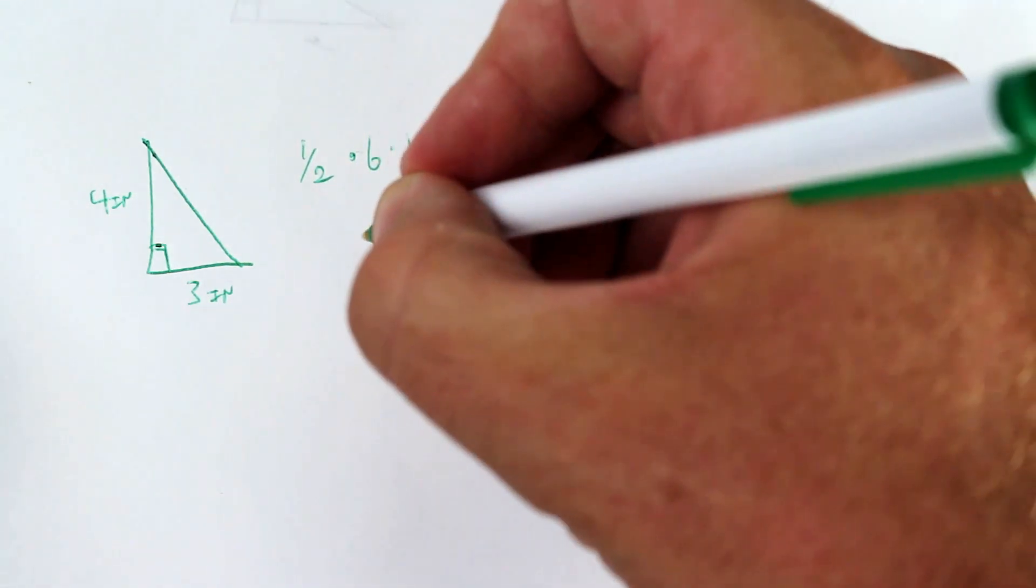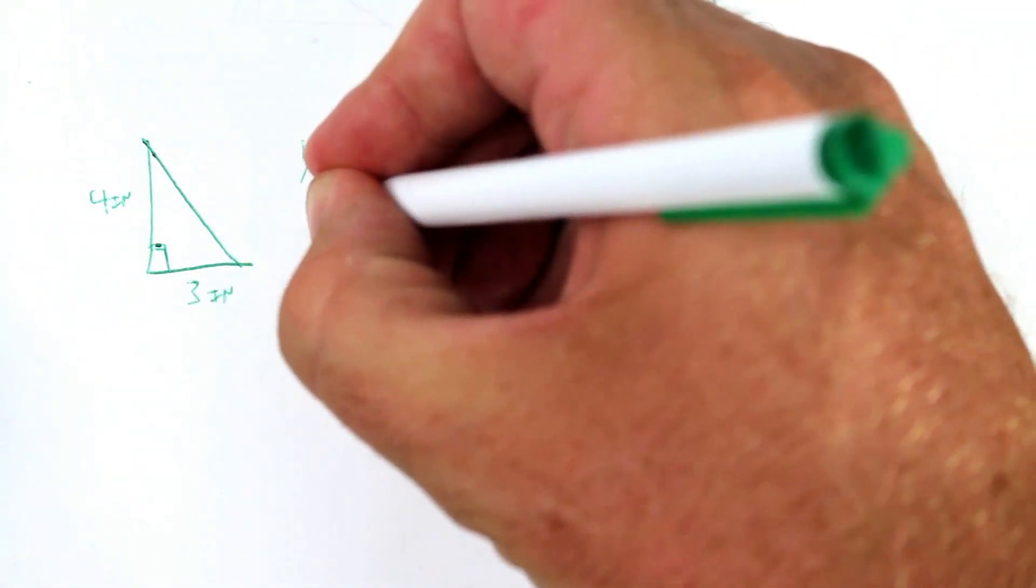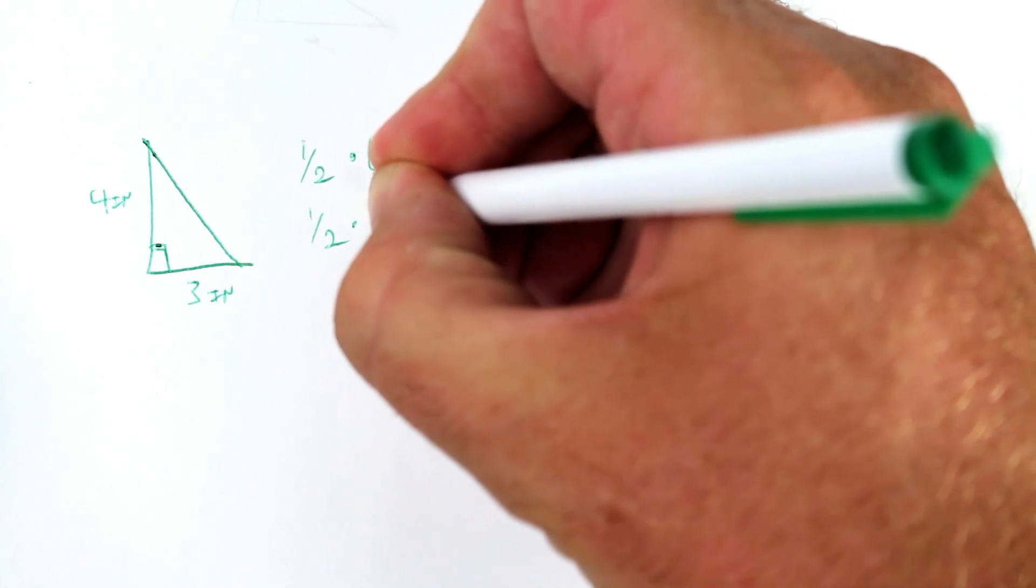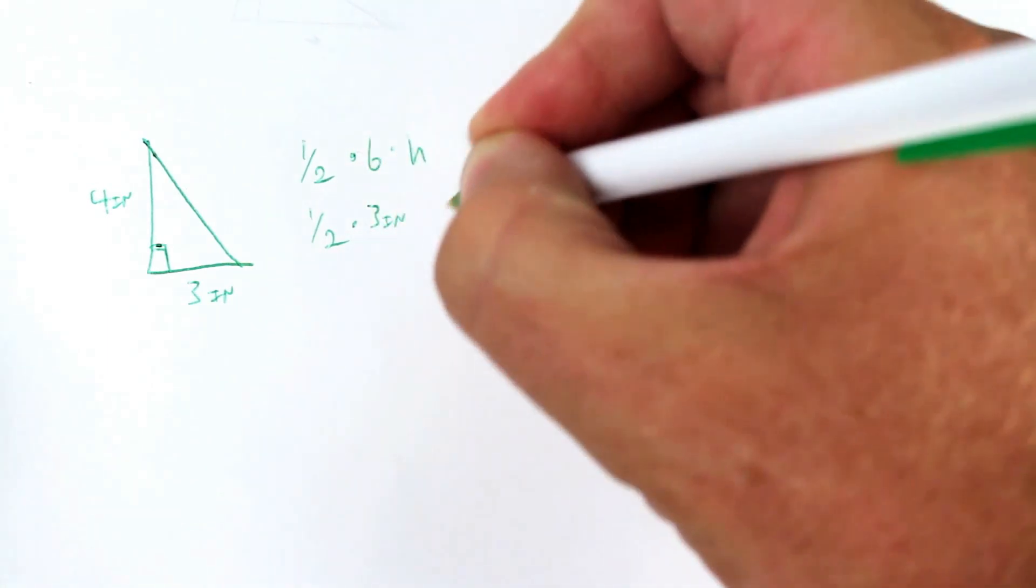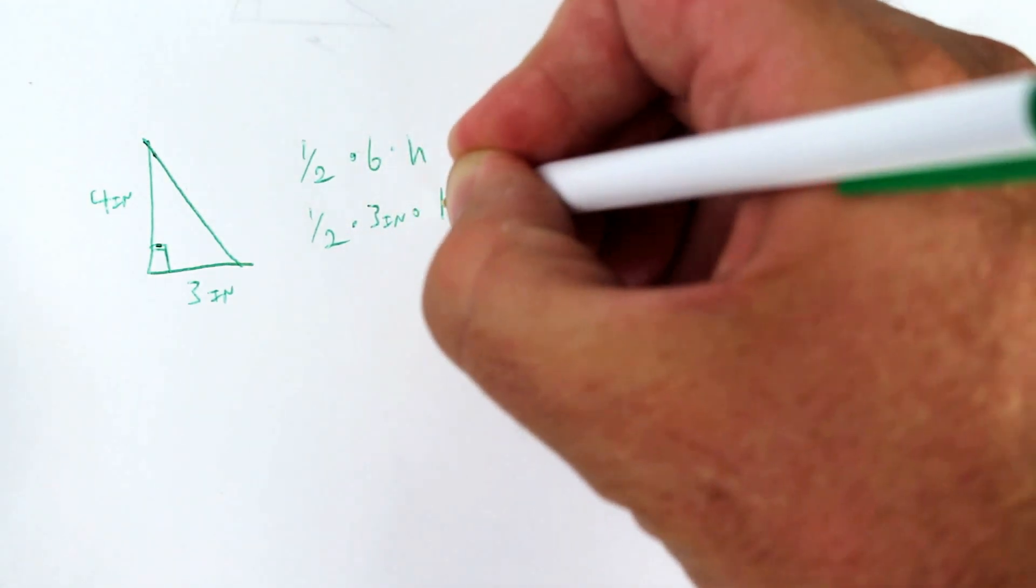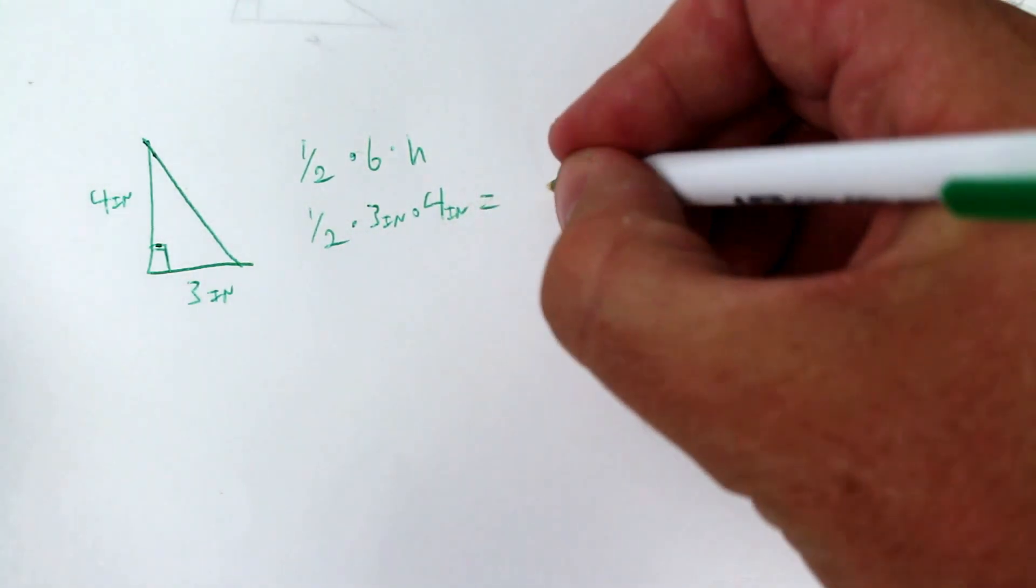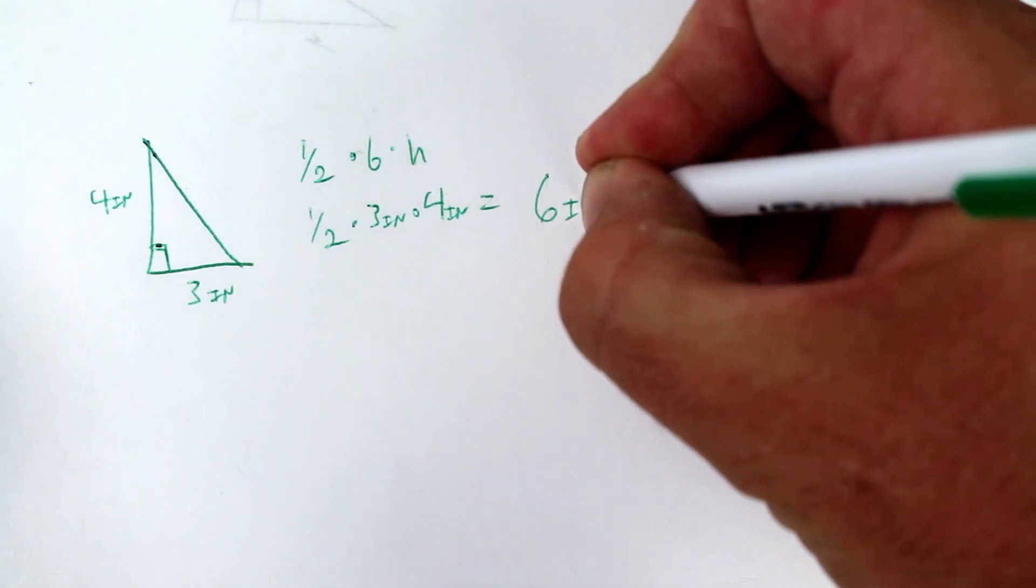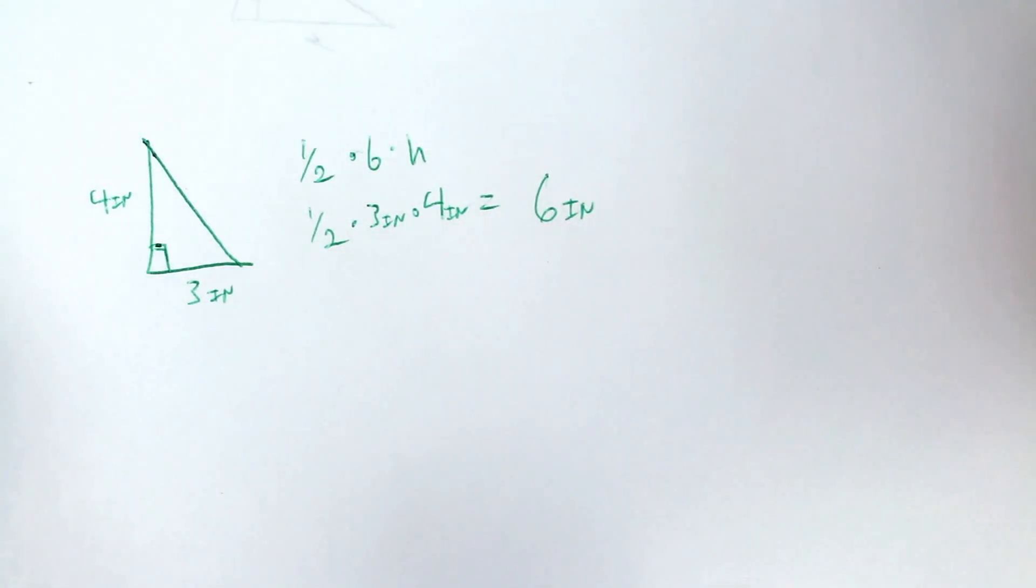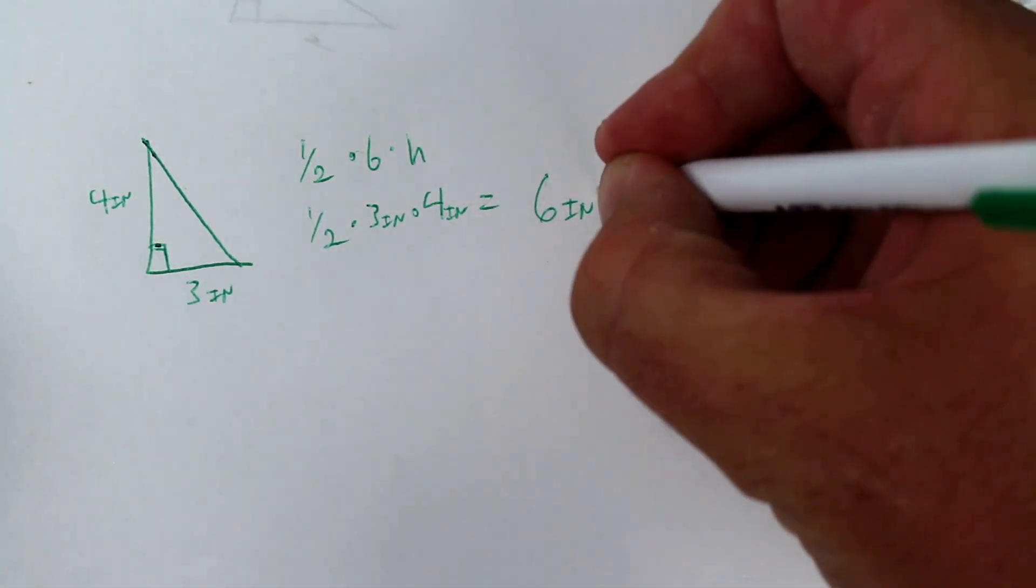One half times base times height. So we have one half times our base of three inches times our height of four inches. And this will give you six inches. And then since we're finding the area of the triangle, it's going to be written as inches squared.